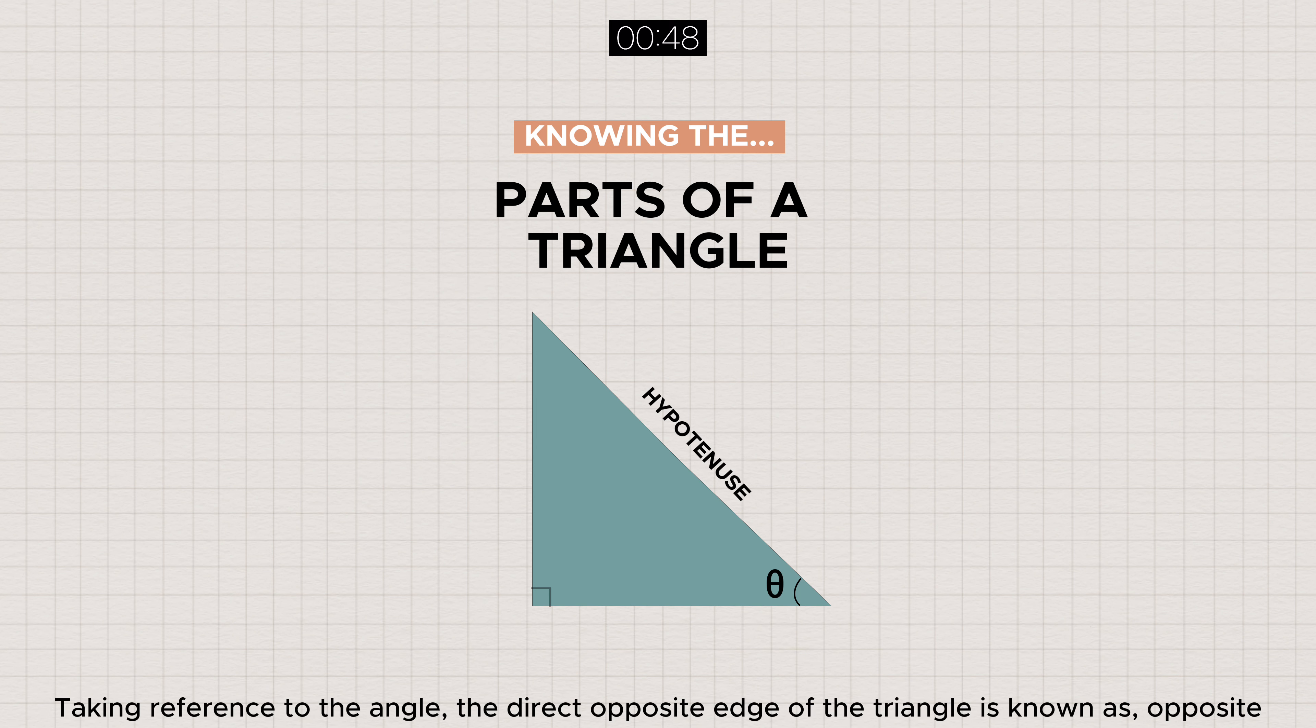Taking reference to the angle, the direct opposite edge of the triangle is known as opposite, while the adjoining side is known as the adjacent.